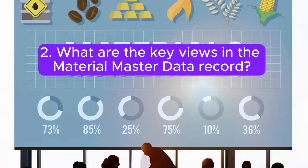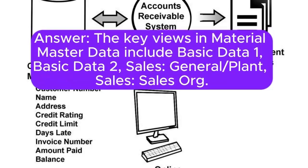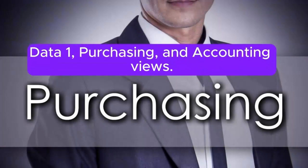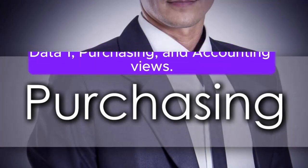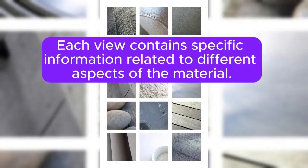Question 2: What are the key views in the Material Master Data record? The key views in Material Master Data include Basic Data 1, Basic Data 2, Sales General/Plant, Sales/Data 1, Purchasing, and Accounting Views. Each view contains specific information related to different aspects of the material.